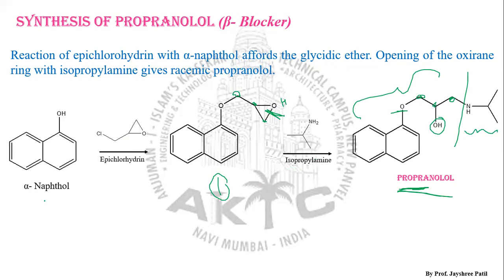So in summary: alpha naphthol on treatment with epichlorohydrin produces structure one, which is basically a glycidic ether. When this ether undergoes treatment with isopropyl amine, there is opening of the epoxide ring, and we ultimately get the product propranolol.